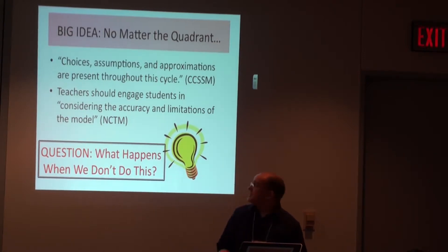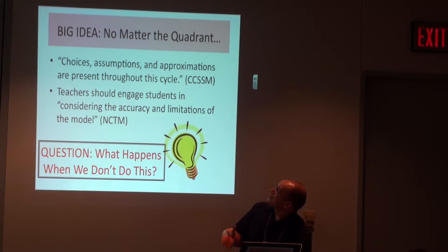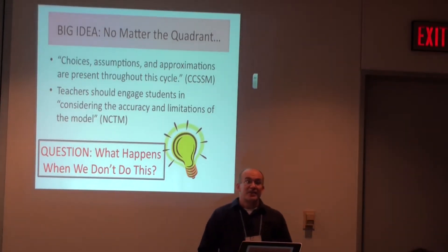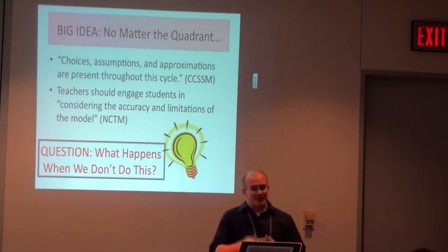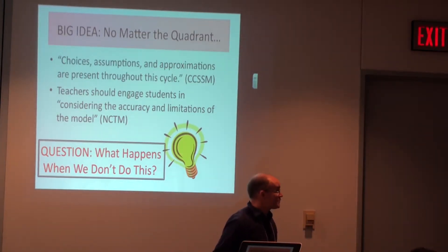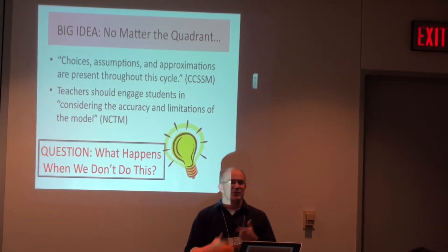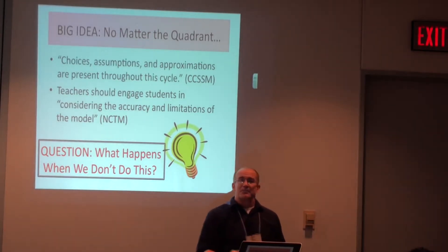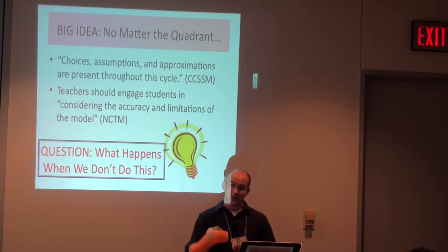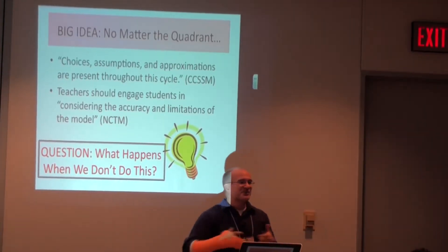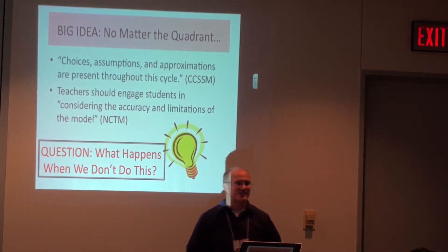When you read the standards, it says that choices, assumptions, and approximations are present throughout this cycle, and that teachers should engage students in considering the accuracy and limitations of the model. These are big — that's different about modeling; these are different kinds of conversations. Even when we're doing problems like a ladder against a wall, which represents a situation and is a model, to have conversations — not just ignore it — but to say: what assumptions are we making in this problem? We simplify the situation to analyze it mathematically. What kind of things were simplified here? What other things would we have to consider if this were a real situation? Let students know it's okay — in math we can start with a more simplified model to learn about it, and if we want to get more complicated, we add in friction on the floor, angle of the ladder, and build a more complicated model.